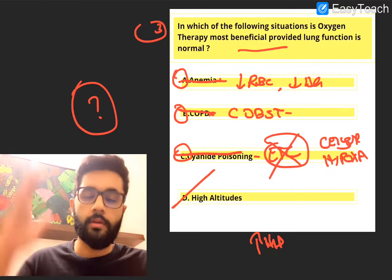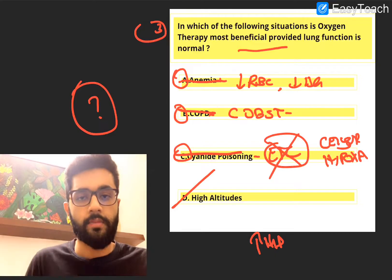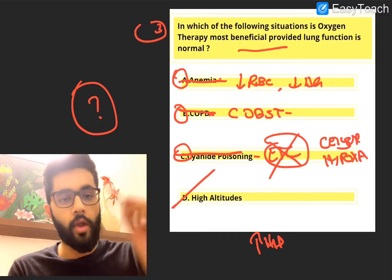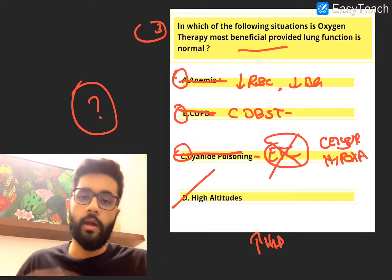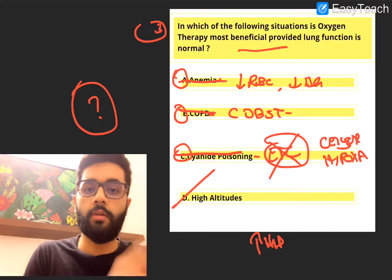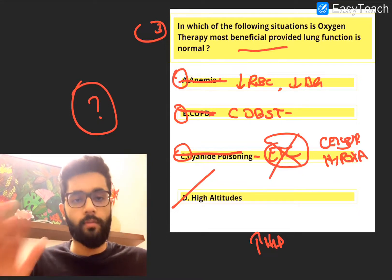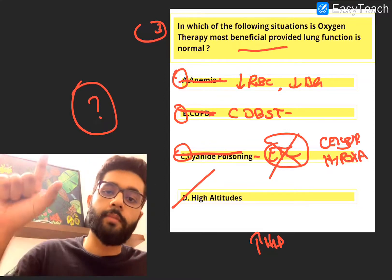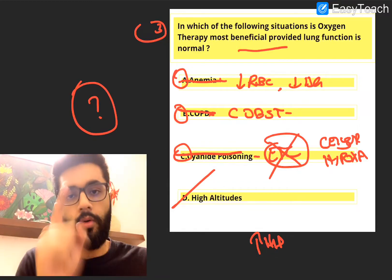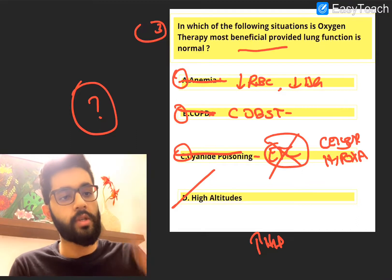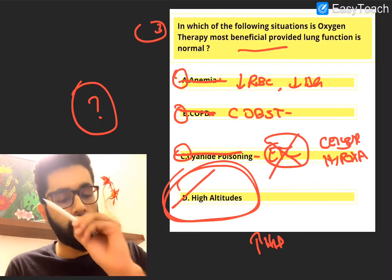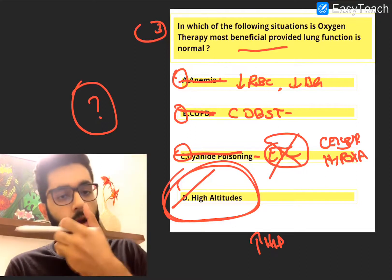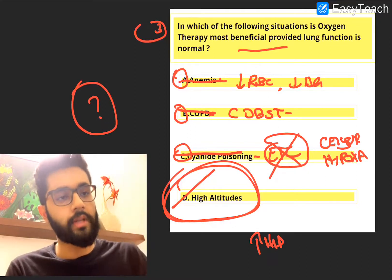Mountain climbers and mountaineers, especially those going to Everest and the highest peaks, always have an oxygen mask and cylinder — because oxygen helps at such high altitudes. As we discussed, the lower the altitude, the higher the pressure, and the higher the pressure, the more the solubility of a gas. At sea level, pressure is normal and there is good oxygen solubility. As we go higher, pressure becomes lower and solubility of all gases including oxygen decreases. So supplemental oxygen helps at high altitudes. The answer is D, high altitude.